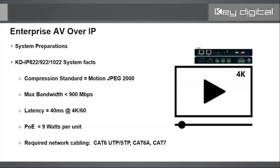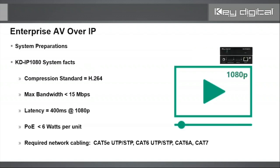Very important: these 4K systems can approach 1G bandwidth, so you must use Cat 6 cable. Cat 5e and Cat 5 don't have the required bandwidth to support this system. I don't want to call it new-installs-only because many of you have been running Cat 6 for years, but it simply does not work over Cat 5 or Cat 5e.